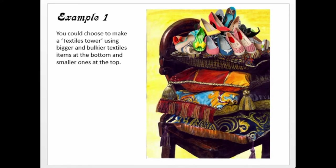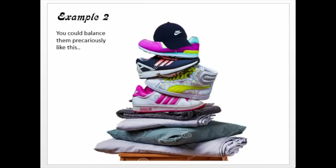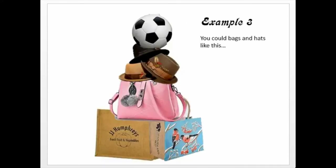For example, here we've got a textiles tower using bigger and bulkier items at the bottom, like cushions, and smaller ones on top, with lots of shoes in a nice big pile. In this example they're really using some balance — they've got lots of textile items, then some shoes, then a hat right at the top. And in this example I've shown a whole lot of bags and hats, with a ball balanced on the top.